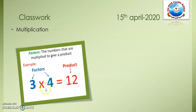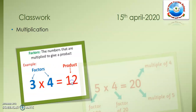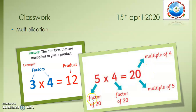For example, when you go to a supermarket and buy something, the products you buy are called products and the market is like a factor. So in 5 times 4, both 5 and 4 are factors because we multiply them together, and the result — 20 — is called the product. It is also a multiple of 4 and a multiple of 5.